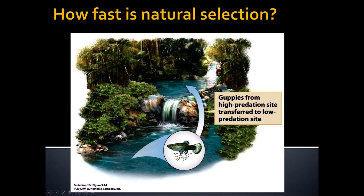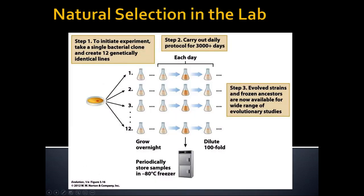Natural selection can be very fast if the fitness difference is very great — within just a couple of generations we can see dramatic shifts. Some species are better for studying this than others. There's been a long-running experiment of more than 30 years in E. coli, chosen because they can reproduce so rapidly — you can have several generations of E. coli each day.